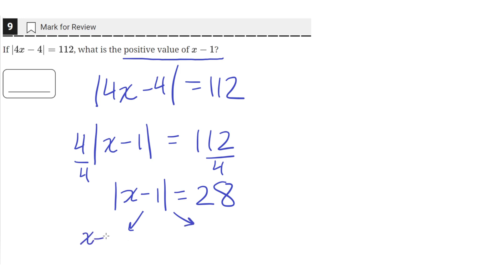One is that x minus 1 equals 28, and the other is that x minus 1 equals negative 28. Because if x minus 1 is equal to 28 inside, then the absolute value of 28 is just equal to 28 as well.